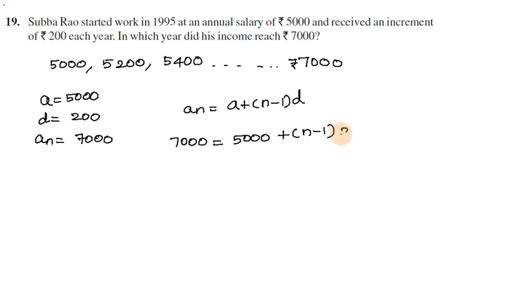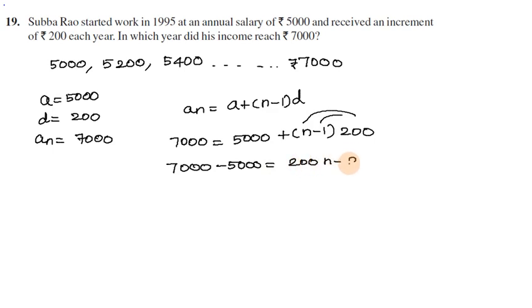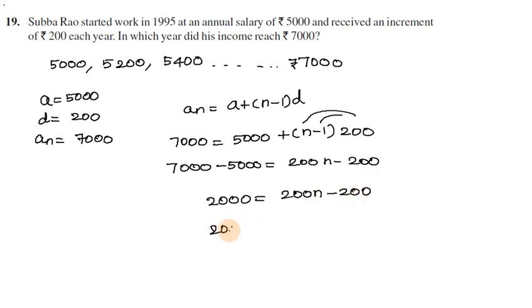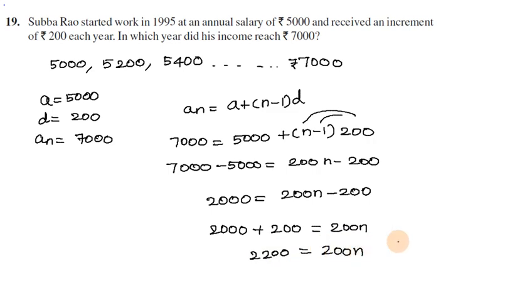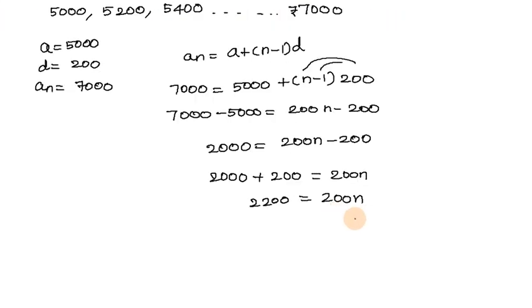So 7,000 = 5,000 + (n − 1) × 200. Therefore 7,000 minus 5,000 equals 200 × (n − 1), which gives 2,000 = 200n − 200. Then 2,000 plus 200 equals 200n, so 2,200 equals 200n.